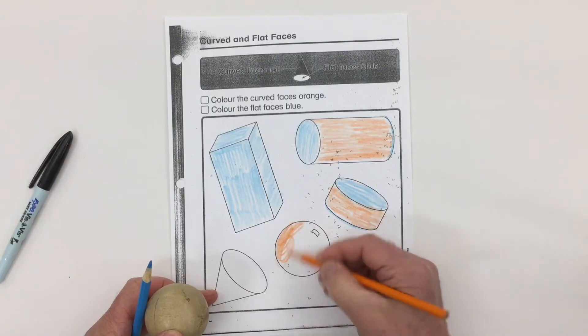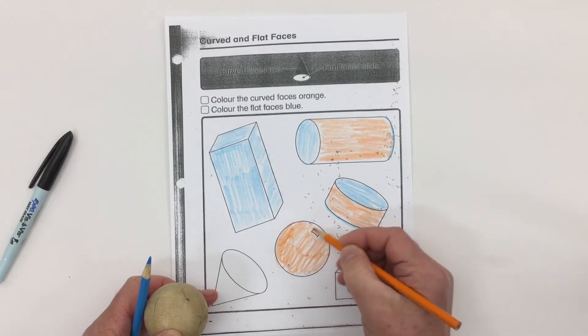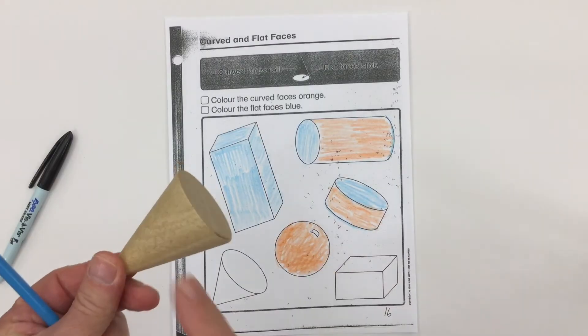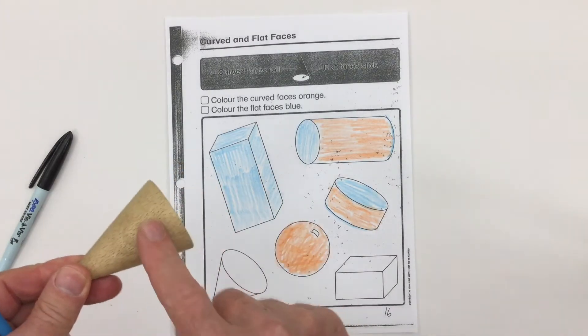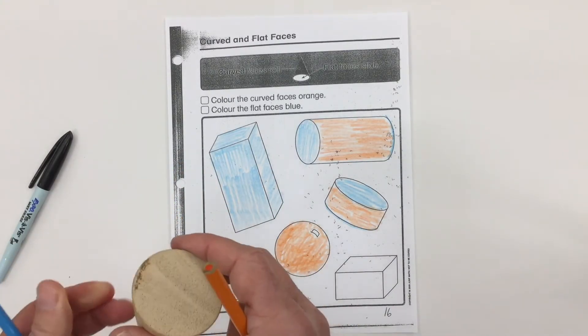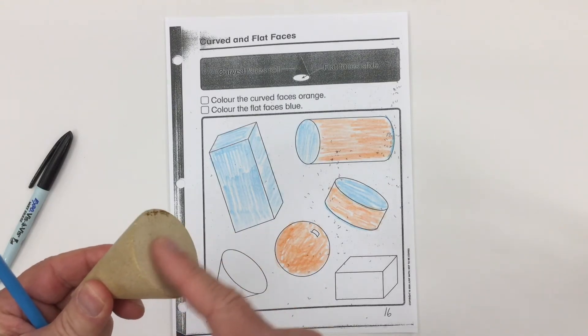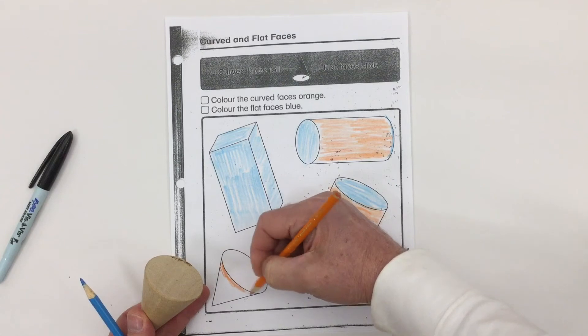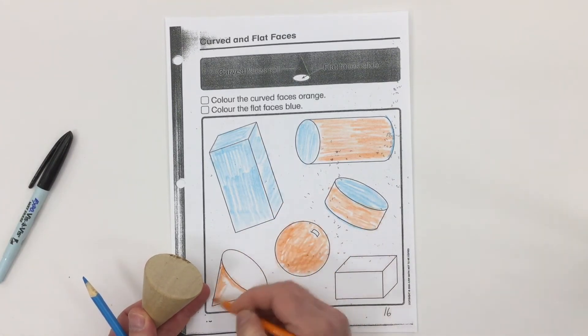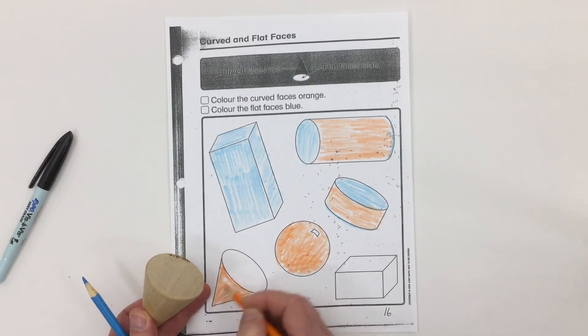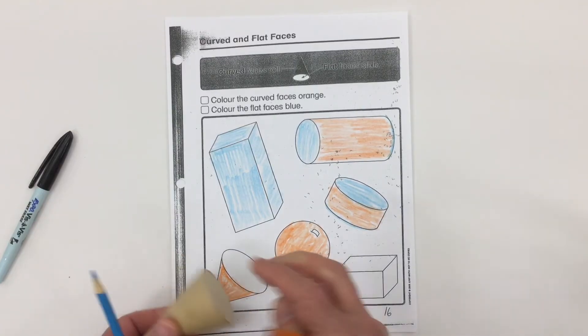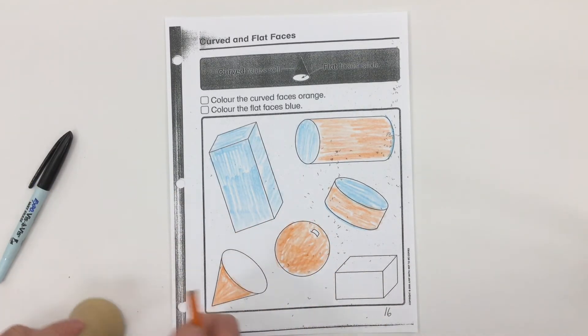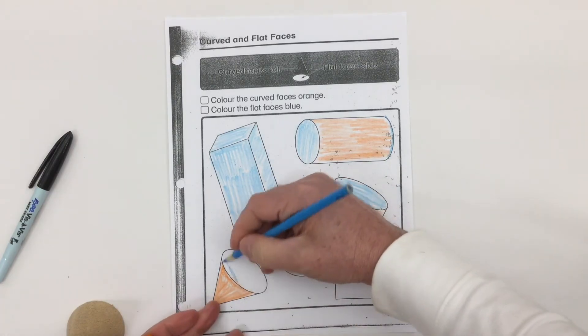Here we've got a cone. We can see there's curved faces, but like our cylinder, there's also flat. So we're going to have a curved orange face all the way up to the point, but a flat blue face.